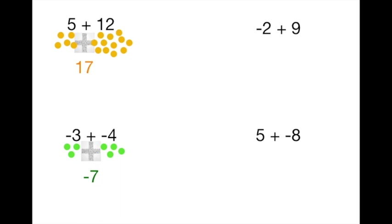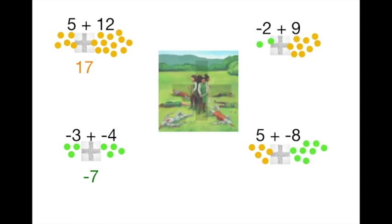On the other hand, when opposites meet at a street corner, there's going to be a fight. In the top problem, negative two plus nine is like two thieves meeting with nine soldiers — the soldiers win, but by how much? Seven. Down below, five soldiers meet with eight thieves — the thieves win, but only by three, because they brought three more people.